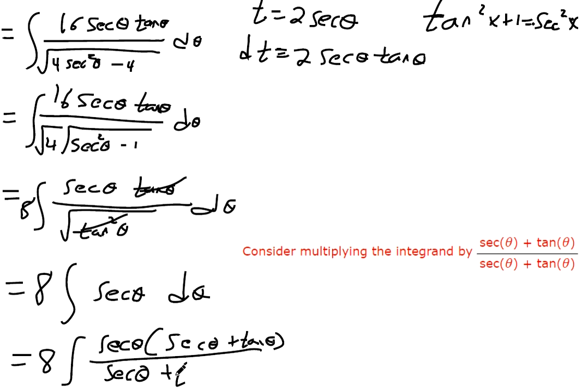So if we do that, we have secant theta plus tangent theta over secant theta plus tangent theta. Remember, the temptation is to say, well, look, I got the same thing on the top and the bottom. Let's cancel that out and make it simpler. But we're trying to expand to rewrite so that we can figure out what the antiderivative is going to be. Okay, so now, can we do u substitution?